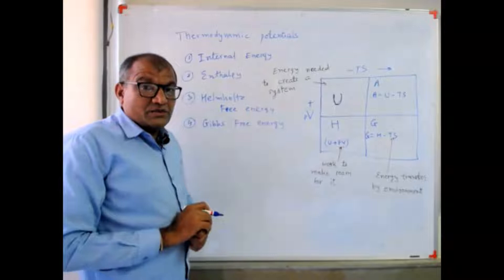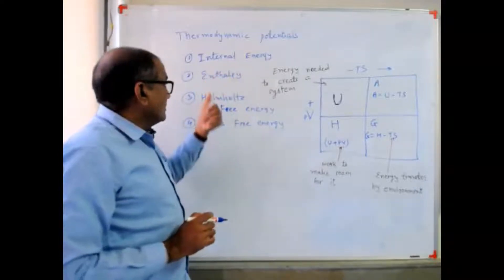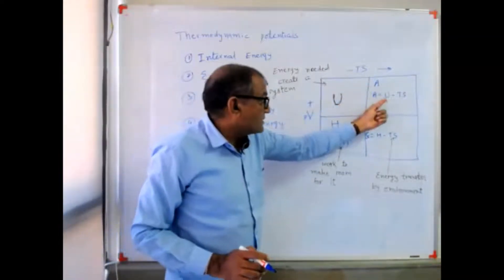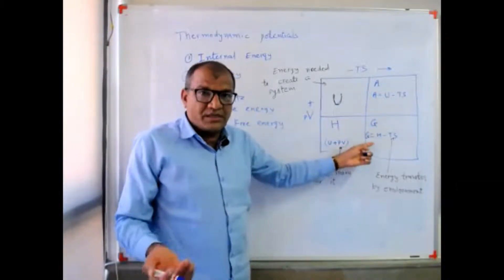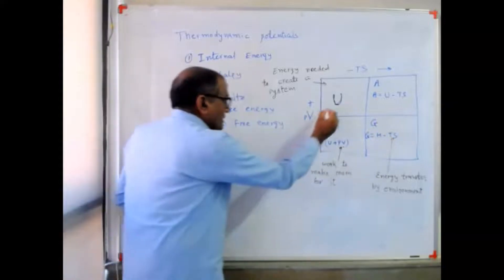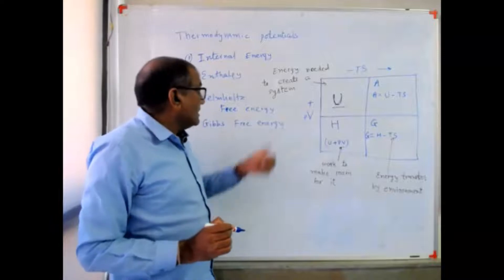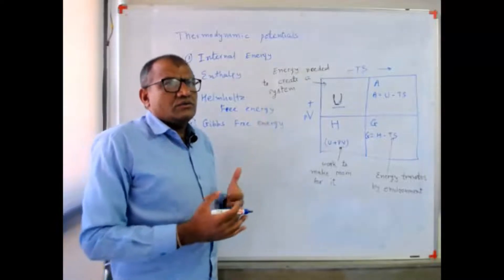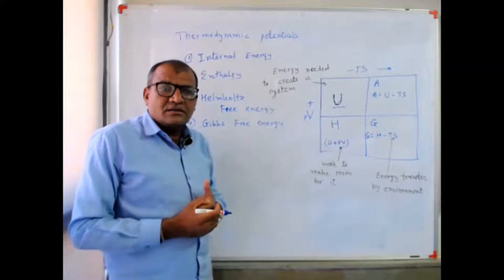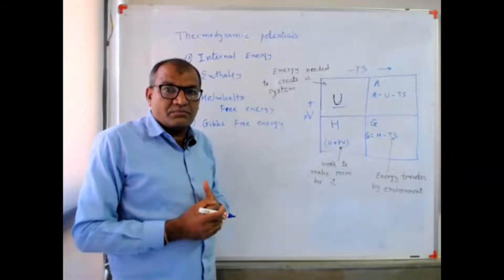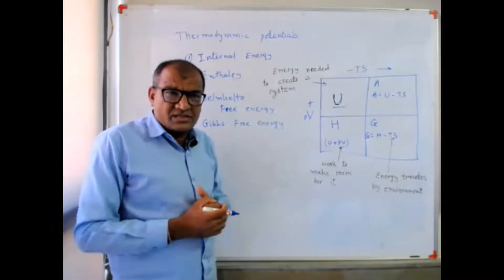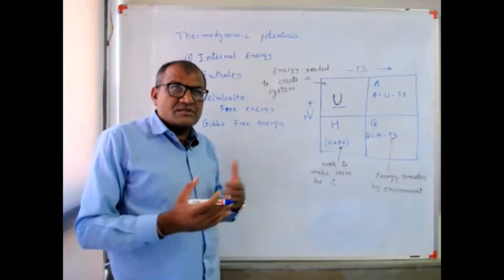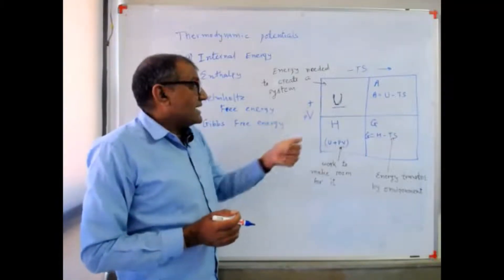These are four thermodynamic potentials: internal energy, enthalpy, Helmholtz free energy, and Gibbs free energy. I have written the equation of Helmholtz free energy, that is A equal to U minus TS. In case of Gibbs free energy, that is H minus TS. What is U? It is internal energy — energy needed to create a system. Internal energy includes the kinetic and potential energy of molecules, like rotational energy and vibrational energy of molecules.